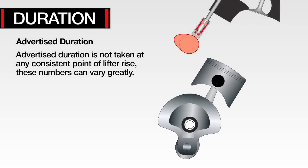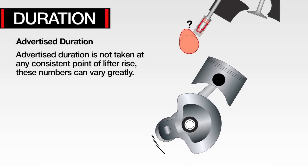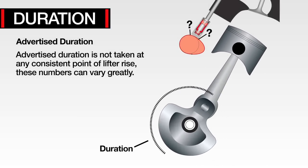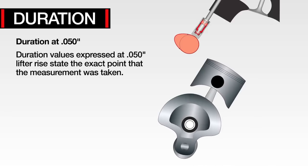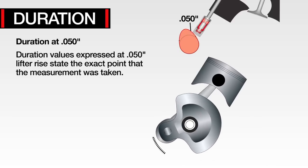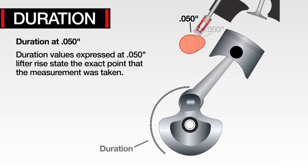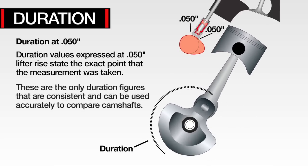Advertised duration is not taken at any consistent point of lift or rise, so these numbers can vary greatly. Duration values expressed at the 50-thousandths lift or rise state the exact point that the measurement was taken. These are the only duration figures that are consistent and can accurately be used to compare camshafts.